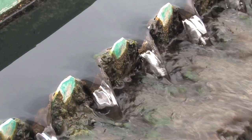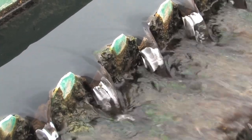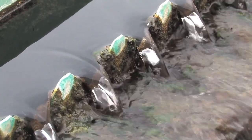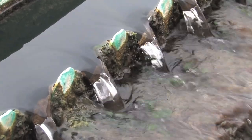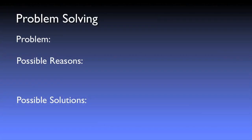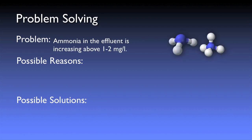Various levels of denitrification may be required depending on the local discharge permit. However, full biological denitrification typically results in only 1–3 mg of nitrate in the effluent stream. Now let's take a look at some real-life operational scenarios. During your routine operational sampling, you notice that the ammonia in the effluent is beginning to rise above 1–2 mg per liter. Let's think about what could be causing this.